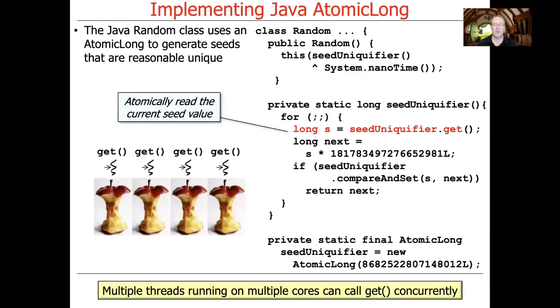And then what we do is we go ahead and we atomically read the current seed value. And the thing to remember about this is that multiple threads running on multiple cores within a process could all be calling this get operation concurrently. So they'll all call get concurrently. That'll atomically read into the local processor cache, local processor core cache, the current value, which, as you can see, starts out with the initialization we made down below.